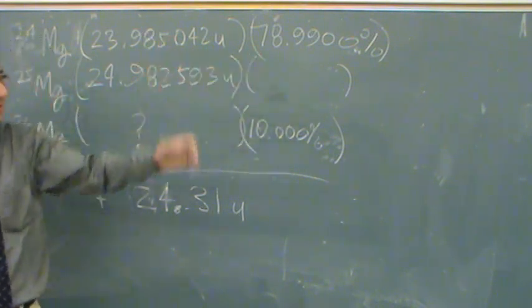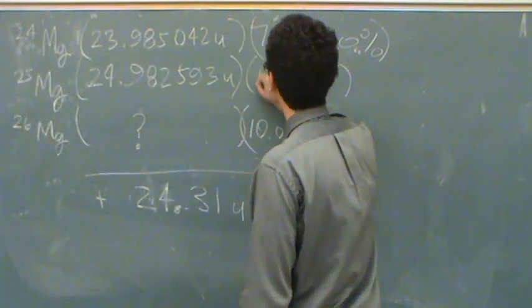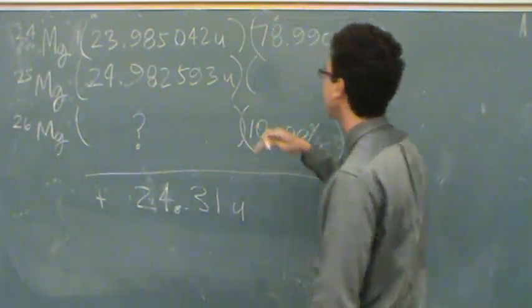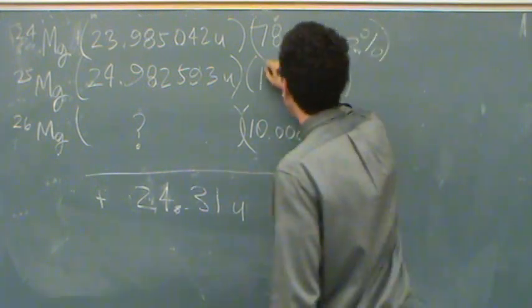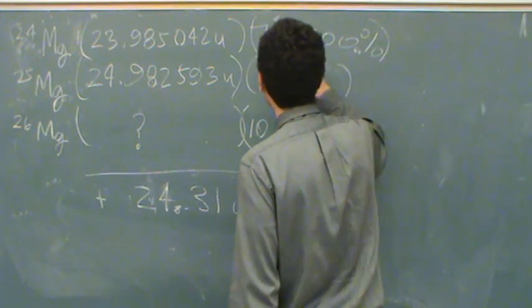Yeah, okay, you're geniuses. 100 minus these two numbers. 11.01, there we go.